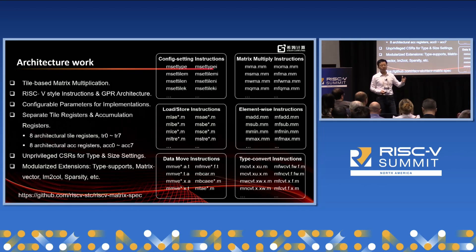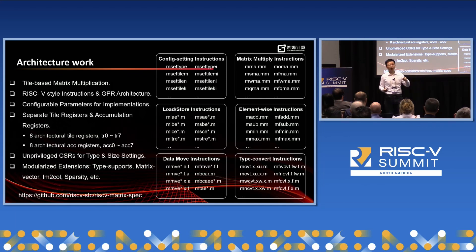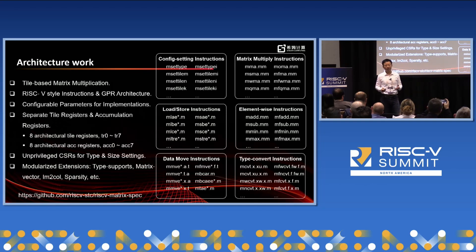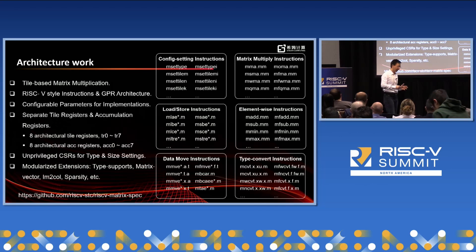This is a modular design supporting many data types to handle various application scenarios. The matrix-vector extension supports direct data exchange between matrix registers and vector registers. The IM2COL or convolution extension supports online convolution computation, improving execution efficiency for convolutional neural networks. The sparsity extension saves memory access bandwidth. In total, the instructions are divided into six blocks. One block I want to highlight is the element-wise instruction block. We are working in the AME task group — the design idea is to support RVV decoupling, meaning the matrix extension can run independently without relying on RISC-V vector. These element-wise instructions handle all element-wise operations like add, subtract, etc.